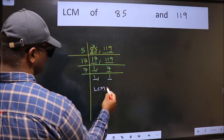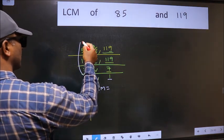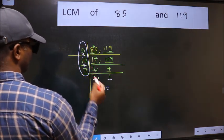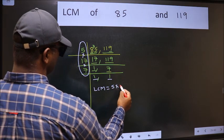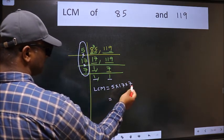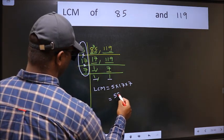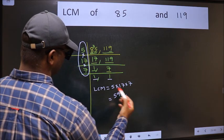So our LCM is the product of these numbers. That is 5 into 17 into 7. When we multiply these numbers, we get 595 is our LCM.